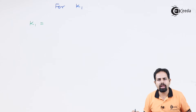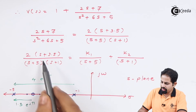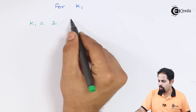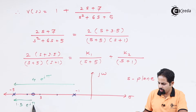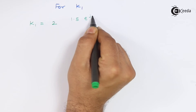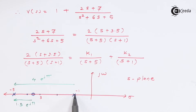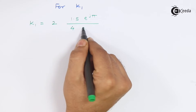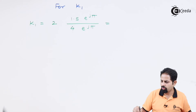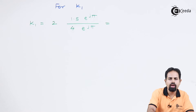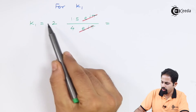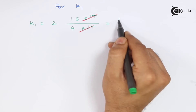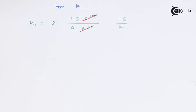k1 equals the scale factor, which is 2, times the zero vector 1.5 into e raised to j pi, divided by the other pole vector 4 into e raised to j pi. The e raised to j pi terms cancel, and the answer is 1.5 divided by 4, divided by the scaling factor 2 — giving us 0.75.